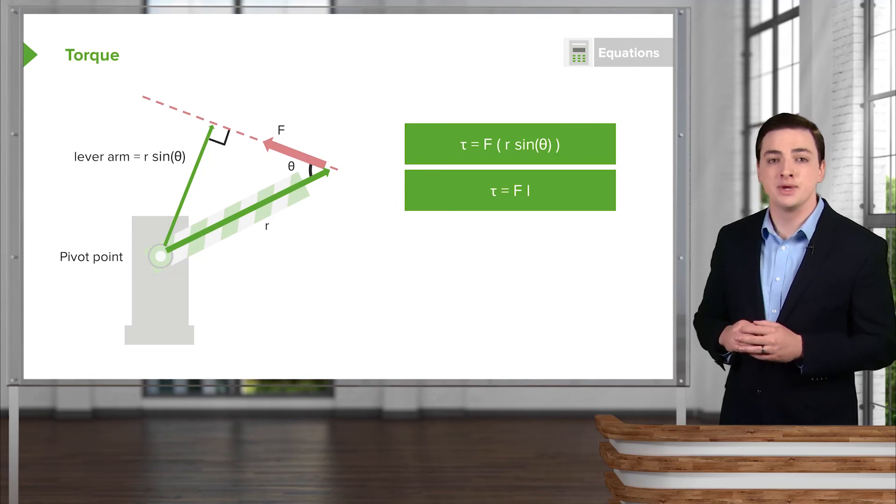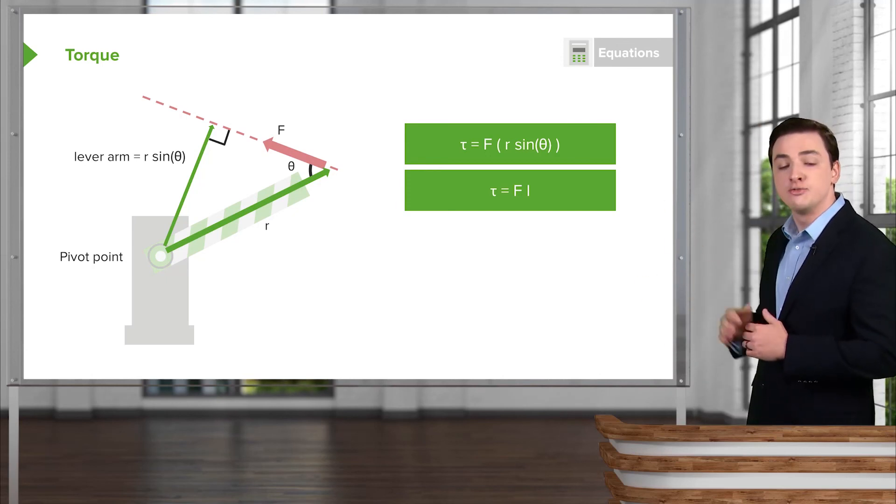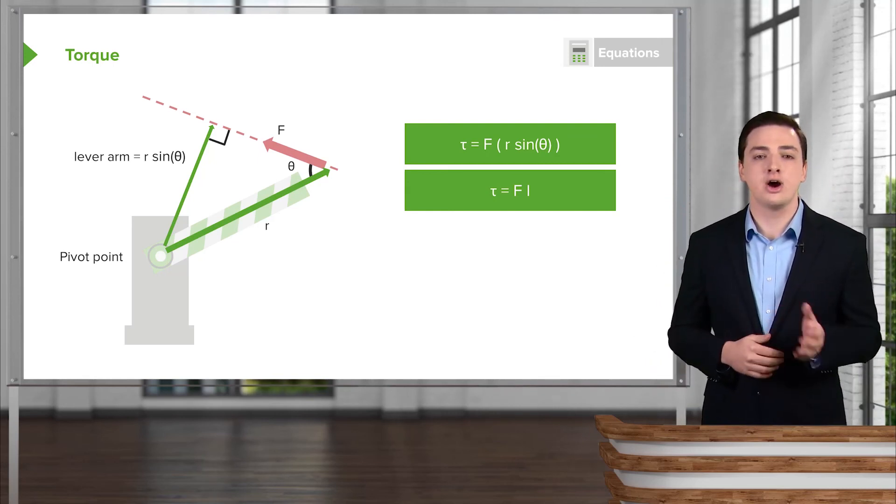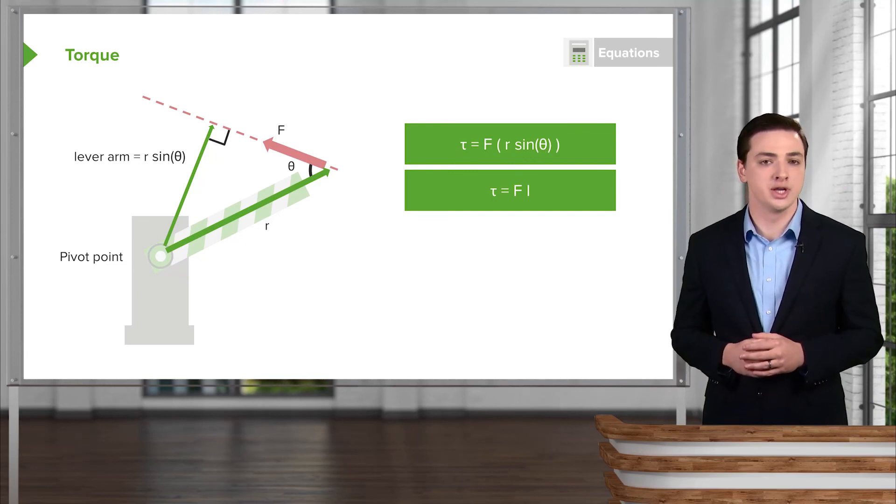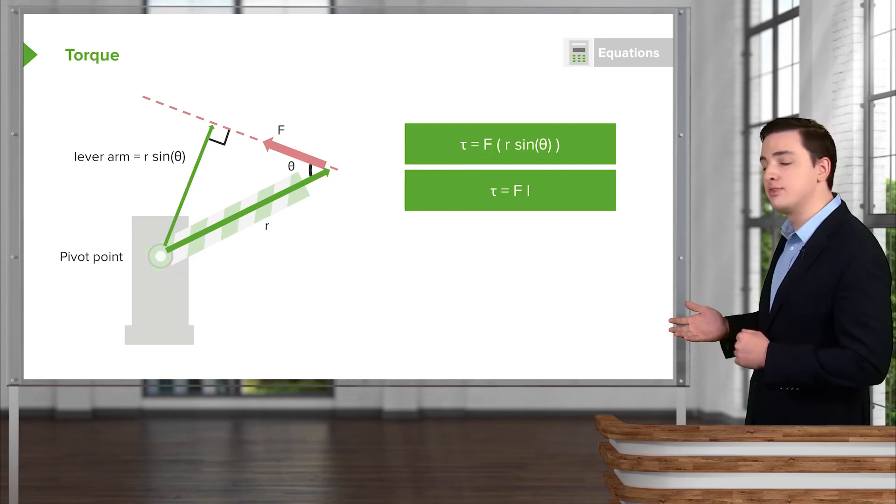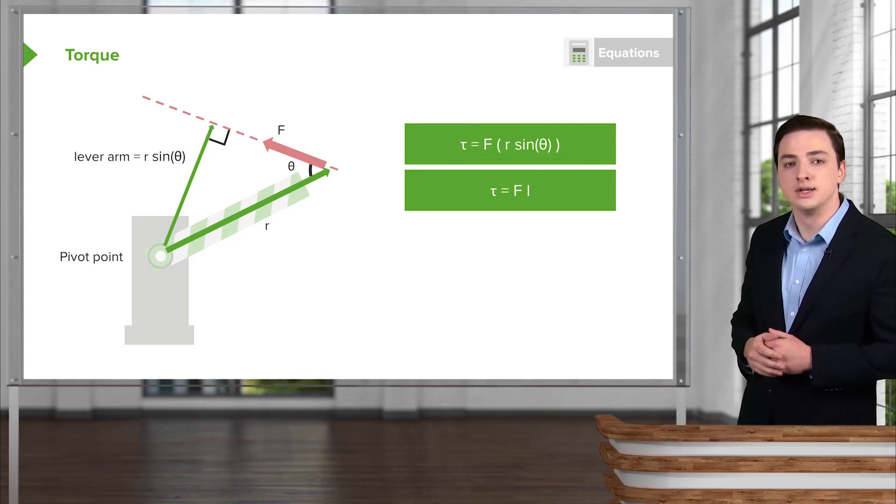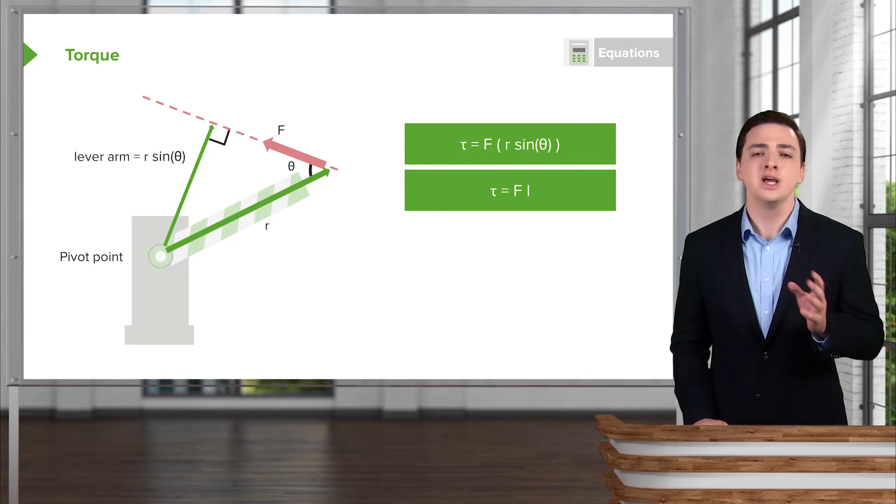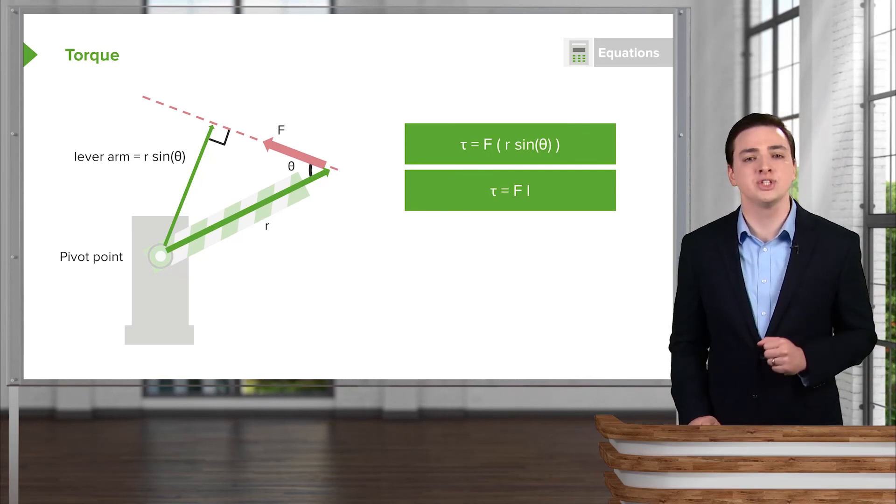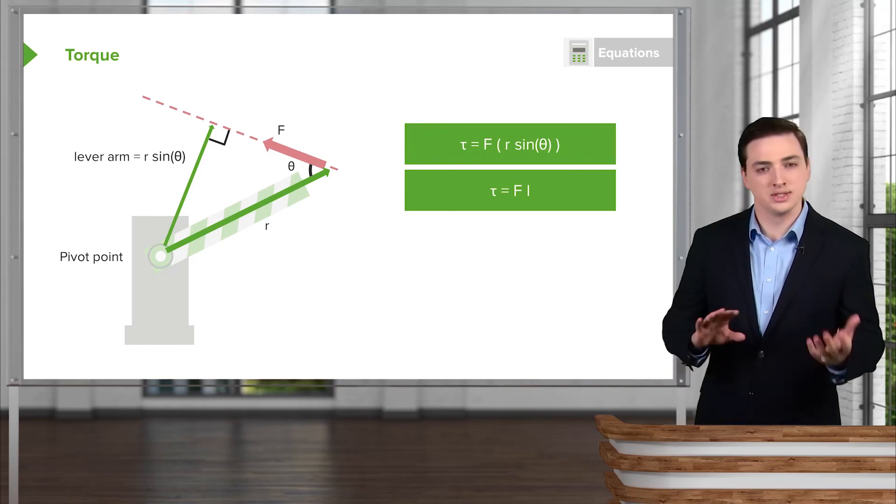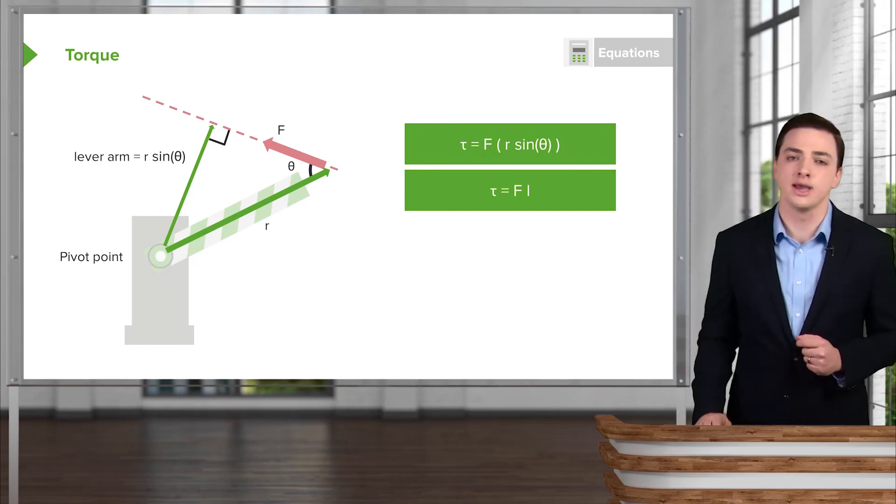If you look at this diagram and consider the triangle that we have formed here with the radius, the line of force, and the lever arm, you can see that the length of the lever arm would be given simply by r times the sine of theta using our trigonometry. And so this lever arm, L, is r times the sine of theta, and we can rewrite our torque equation as simply torque equals force times the lever arm. And we'll see soon how sometimes the lever arm is much easier to find than thinking about the more abstract concept of where is my force, and where is my distance, and what is the angle between them.